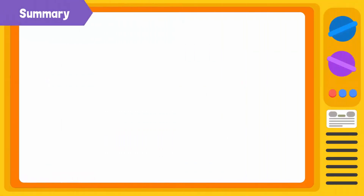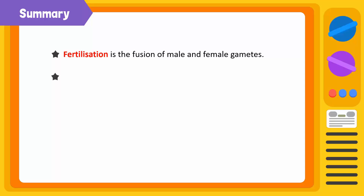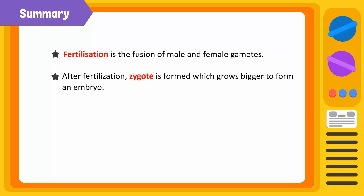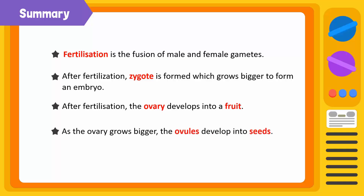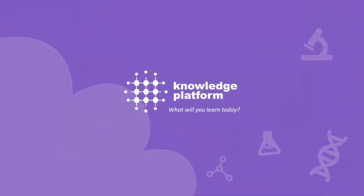Let's summarize. Fertilization is the fusion of male and female gametes. After fertilization, a zygote is formed, which grows bigger to form an embryo. Then, the flower undergoes several changes and the ovary develops into a fruit. As the ovary grows bigger, the ovules develop into seeds.